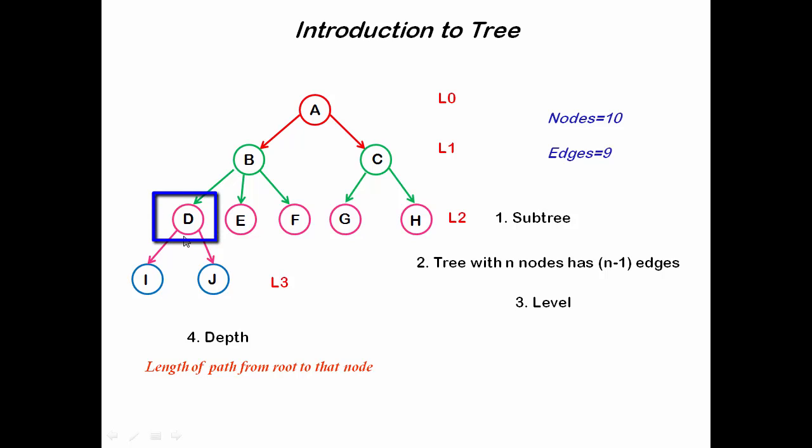If we consider the node D, then root to D has two edges. So depth of D is 2, and depth of root node is 0.